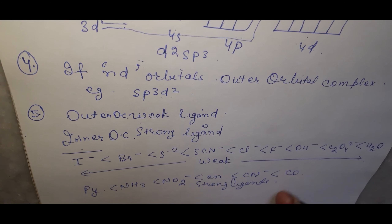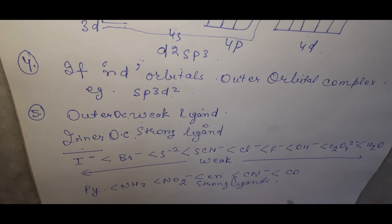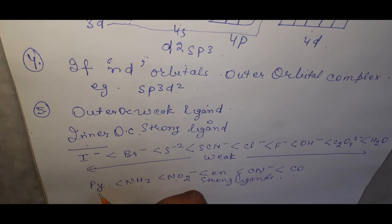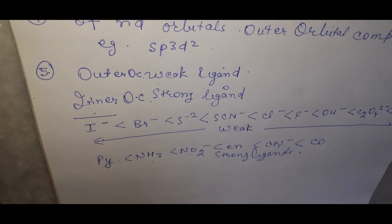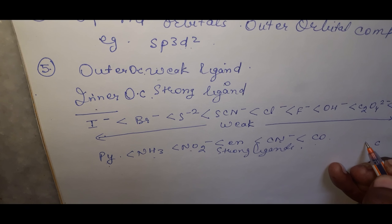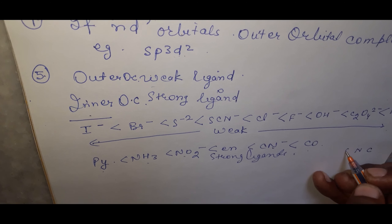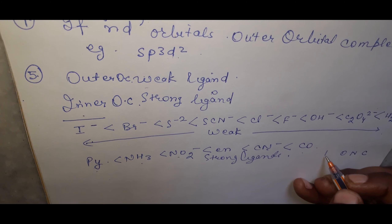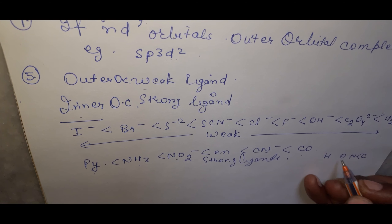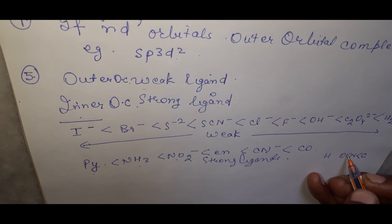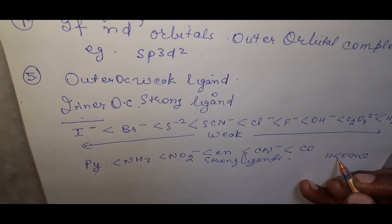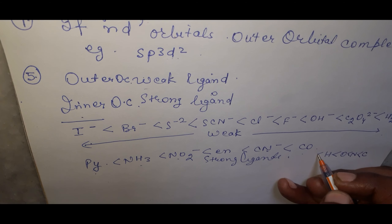Among the strong ligands — CO, CN⁻, en, NO₂⁻, NH₃, pyridine — the strongest donors include carbon and nitrogen, because carbon can donate lone pairs most effectively, followed by nitrogen and then oxygen and hydrogen.